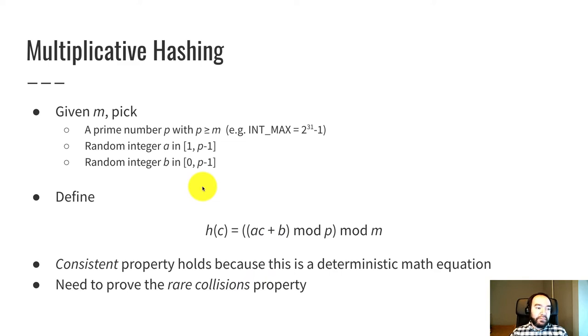So here it is. Given m, so m is given to us. That's chosen. And it's going to be the size of the vector. So it defines the range of outputs of our hash function. So given m, we need to pick three things.